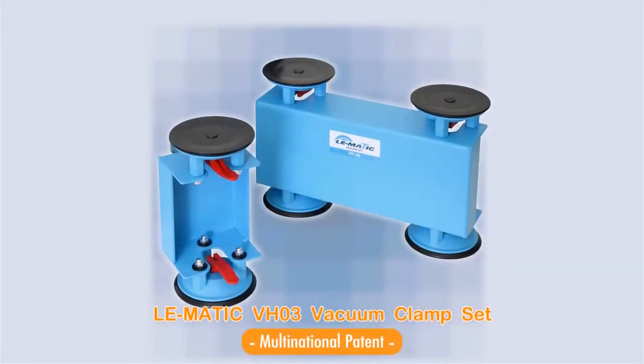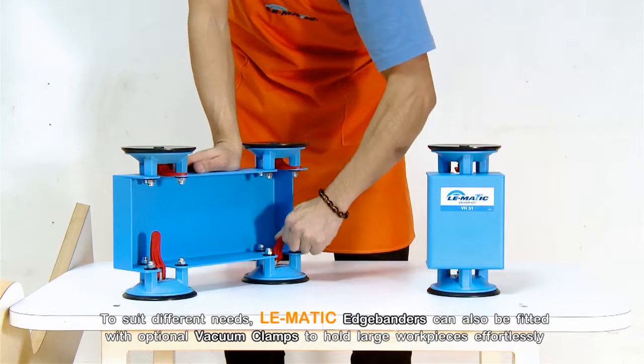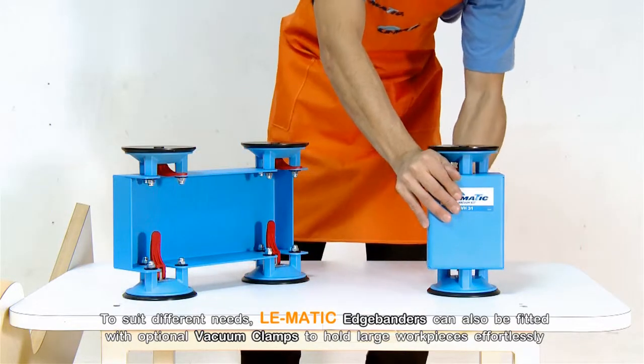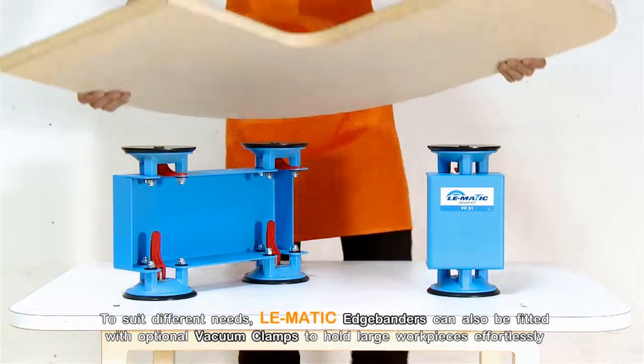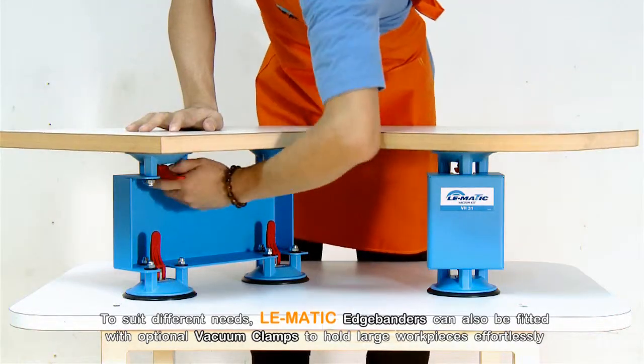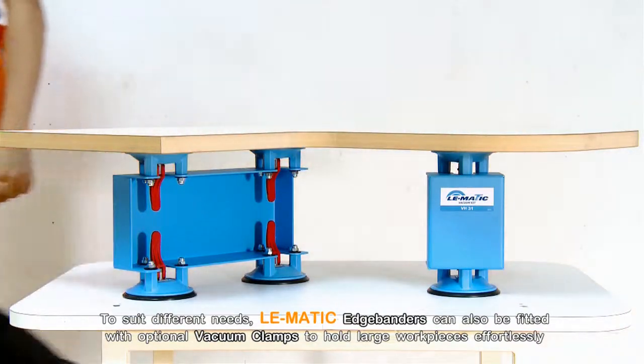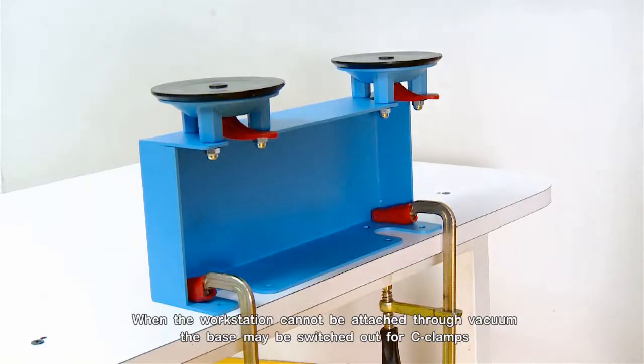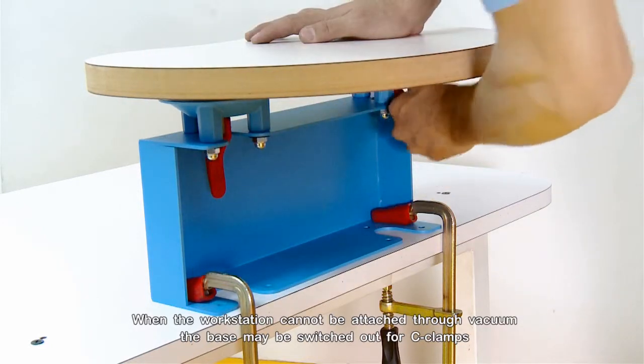The Lomatic VH-03 Vacuum Clamp Set. To suit different needs, Lomatic Edge Banders can also be fitted with optional vacuum clamps to hold large workpieces effortlessly. When the workstation cannot be attached through vacuum clamps, the base may be switched out for seat clamps.